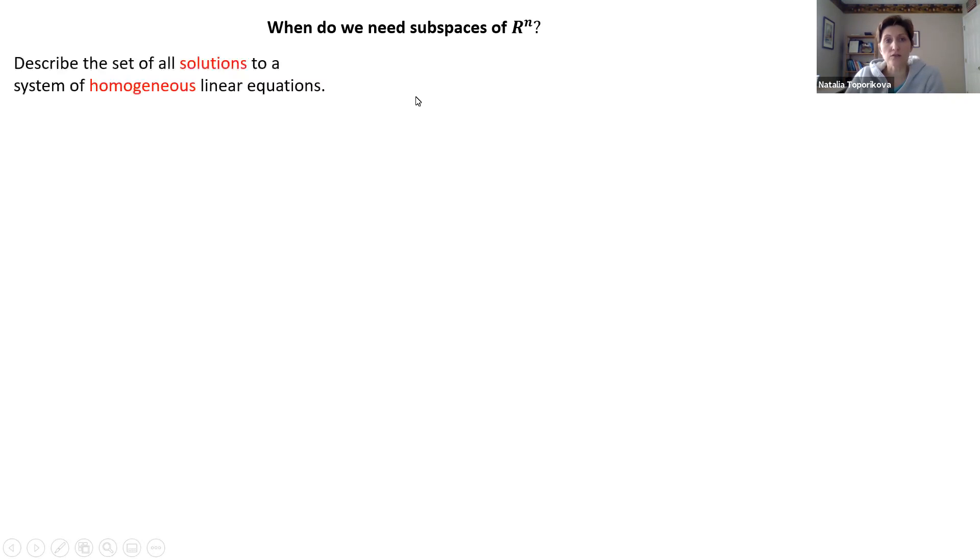There are actually two main reasons to use spaces and vector spaces and subspaces. The first one is when we want to describe a set of solutions of a system of homogeneous linear equations, which we do in this course a lot. And we will call this kind of collection a null space.